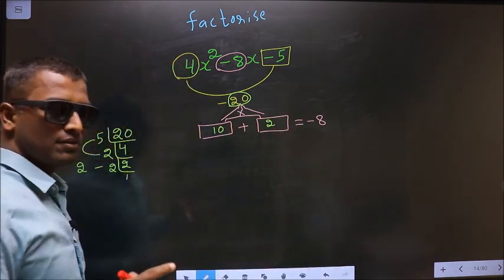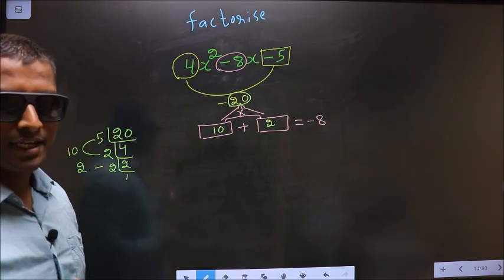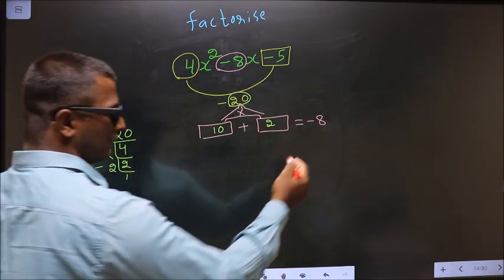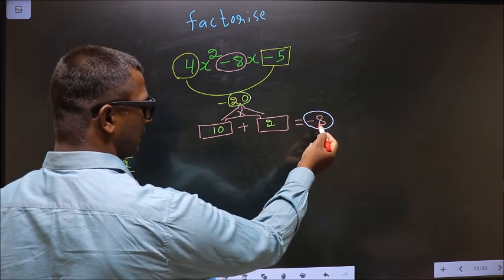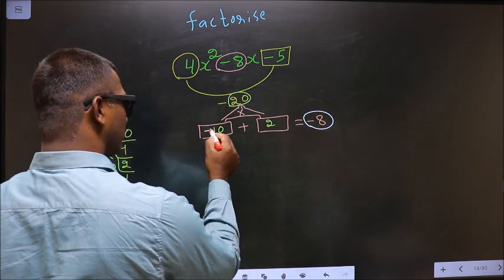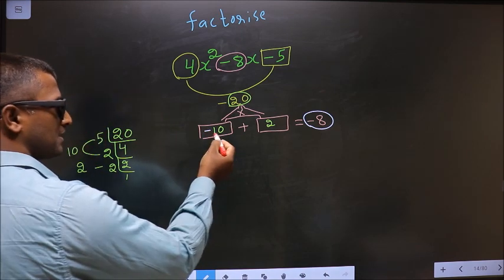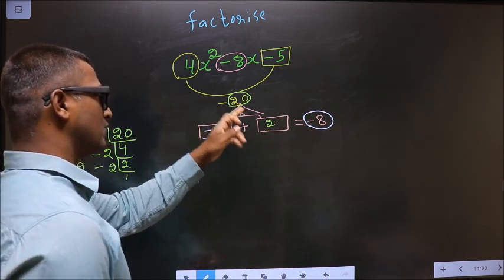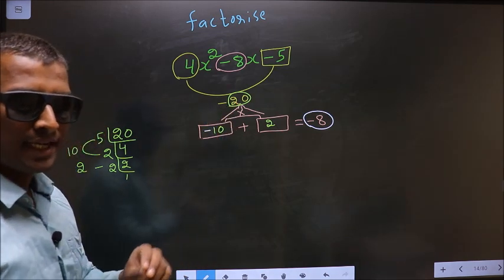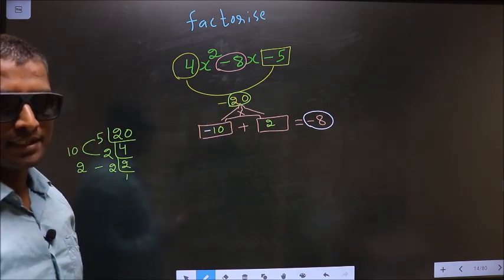Now you should adjust the signs. To get here -8, this could only happen if you put minus before 10. -10 + 2 = -8. Now the signs are also adjusted.